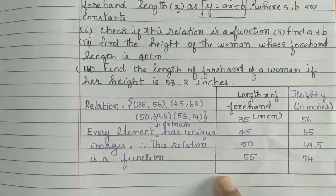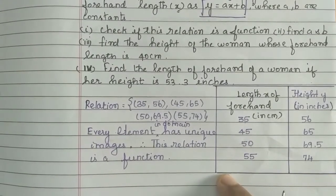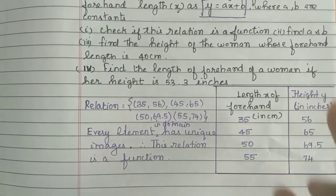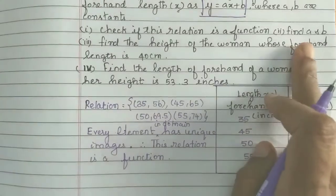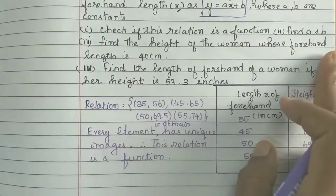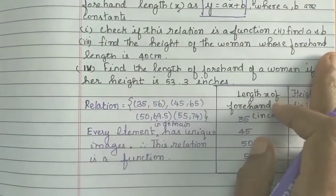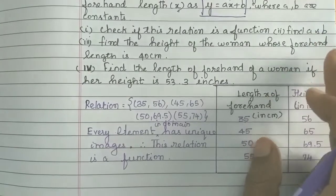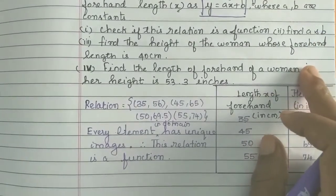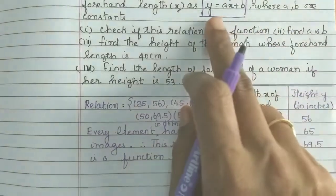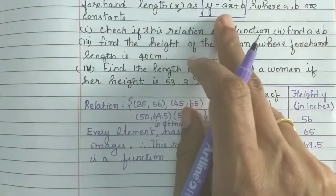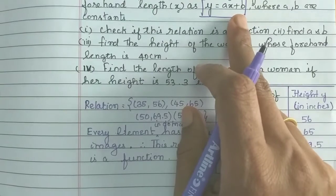This relation is a function. Next question: find a and b. We have the function y = ax + b, where a and b are constants. To find these constants, we will substitute pairs of x and y values from the table into the equation.